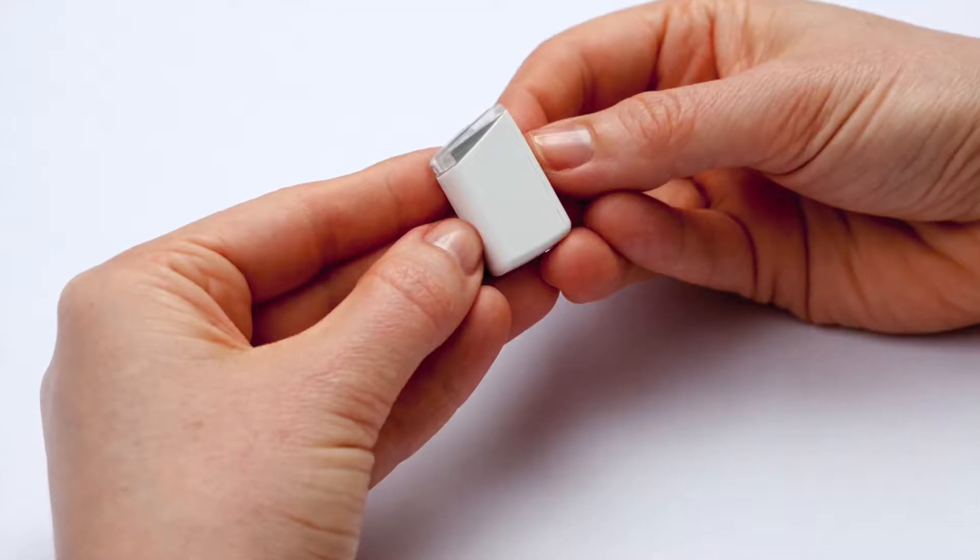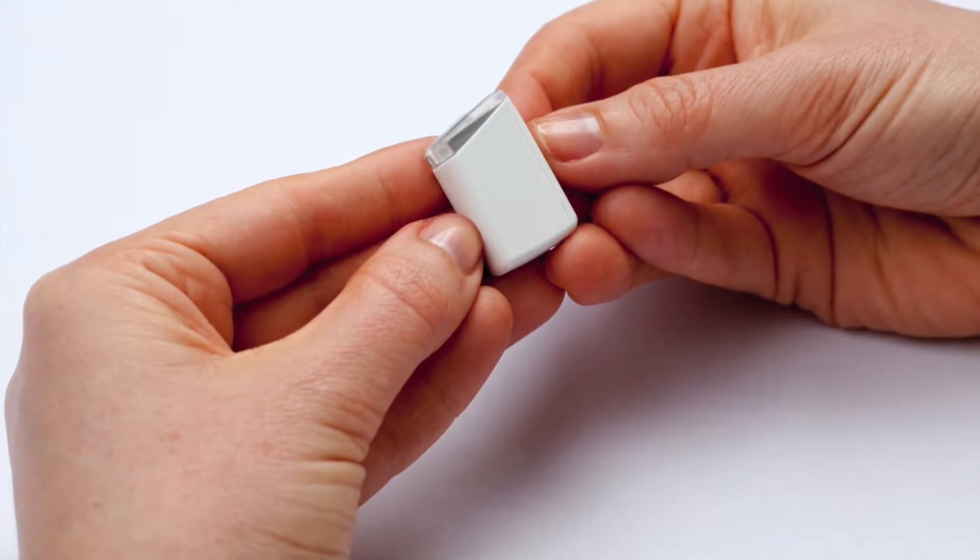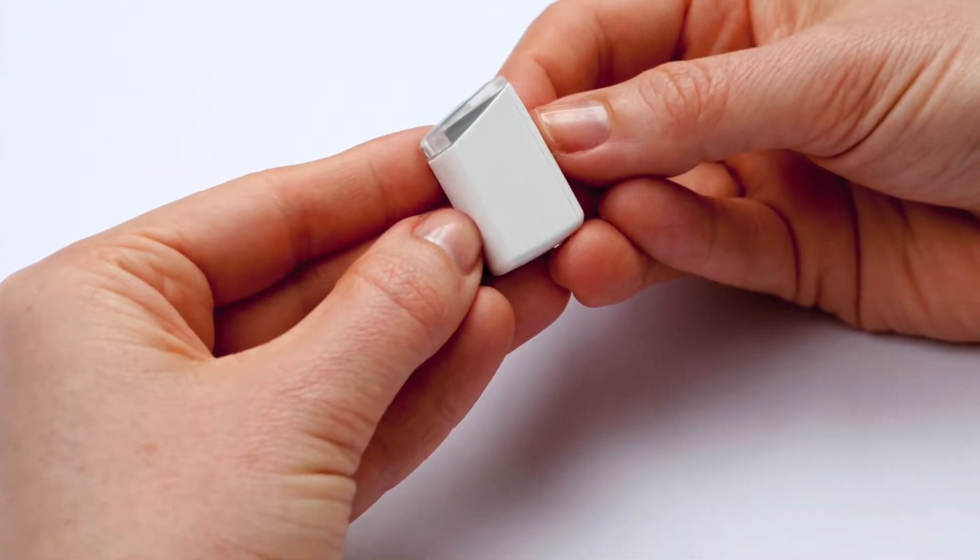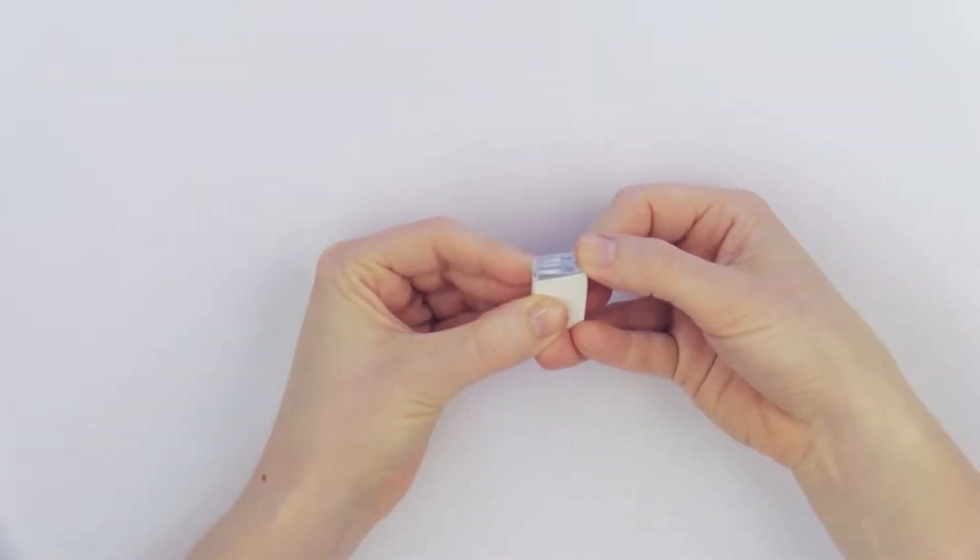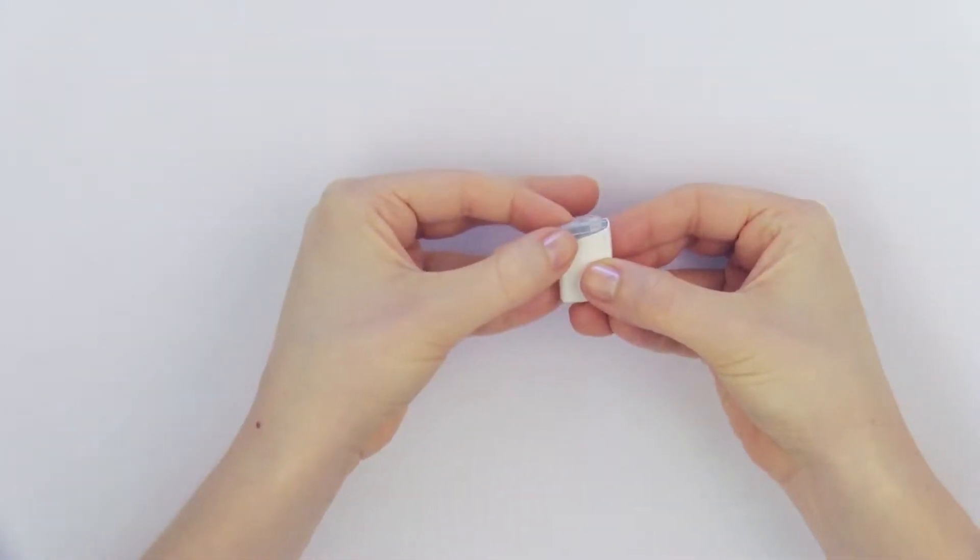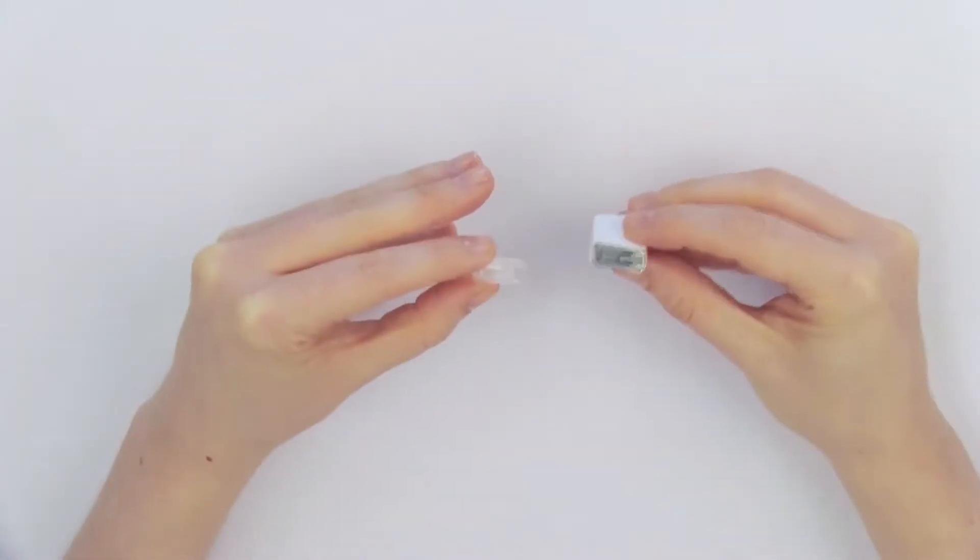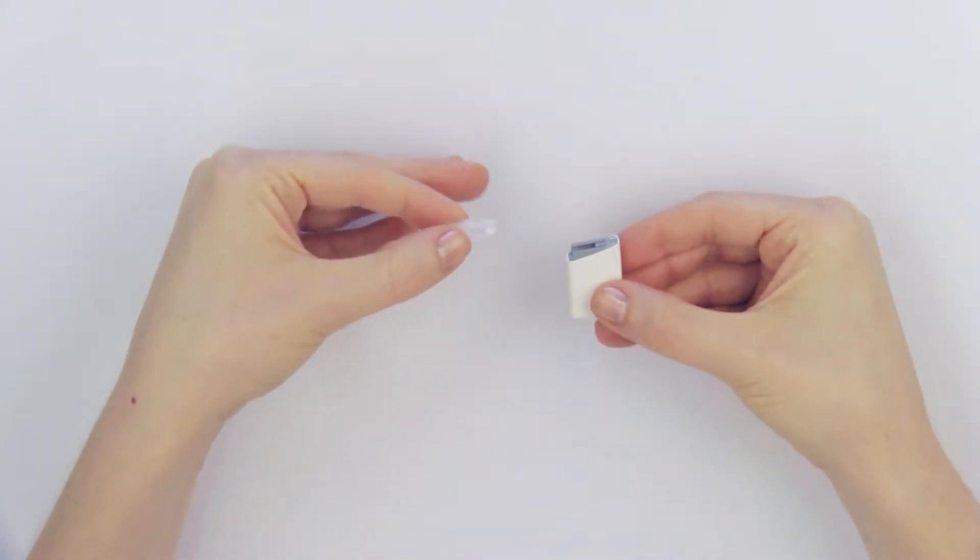To remove the PowerCell cover, hold the PowerCell with the cover attached in one hand. Using the other hand, push the narrow end of the cover with your thumb until it clicks loose. Continue to slide the cover in the same direction until it is fully removed from the PowerCell.